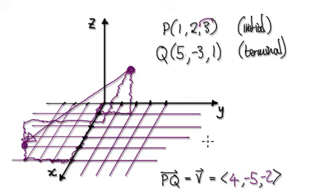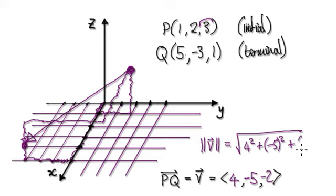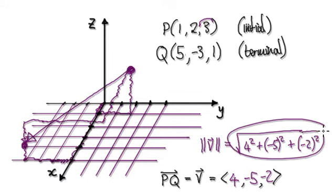And to find the magnitude, the magnitude would be the square root of 4 squared plus negative 5 squared plus negative 2 squared. So this would be your magnitude.